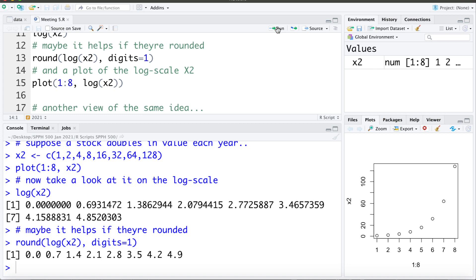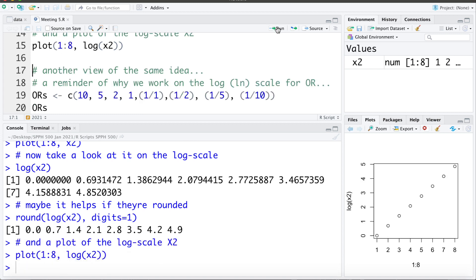And if we take a look at a plot of the log of x2, let's do that here. We can see now for each year the increase is the same amount. So this is a linear growth on a log scale.